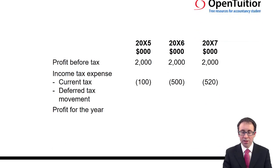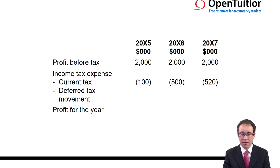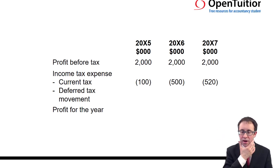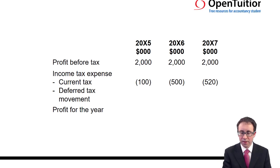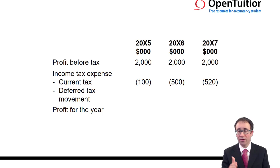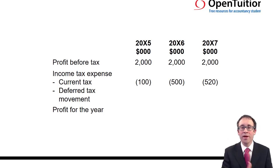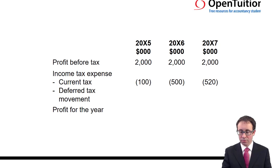What we need to do is look at our profit after tax for the year. This is what we have currently from the earlier example: accounting profits of 2 million each year, and current tax of 100, 500, and 520 — that's what we've estimated as our expense and what will appear as the tax payable balance on the statement of financial position.